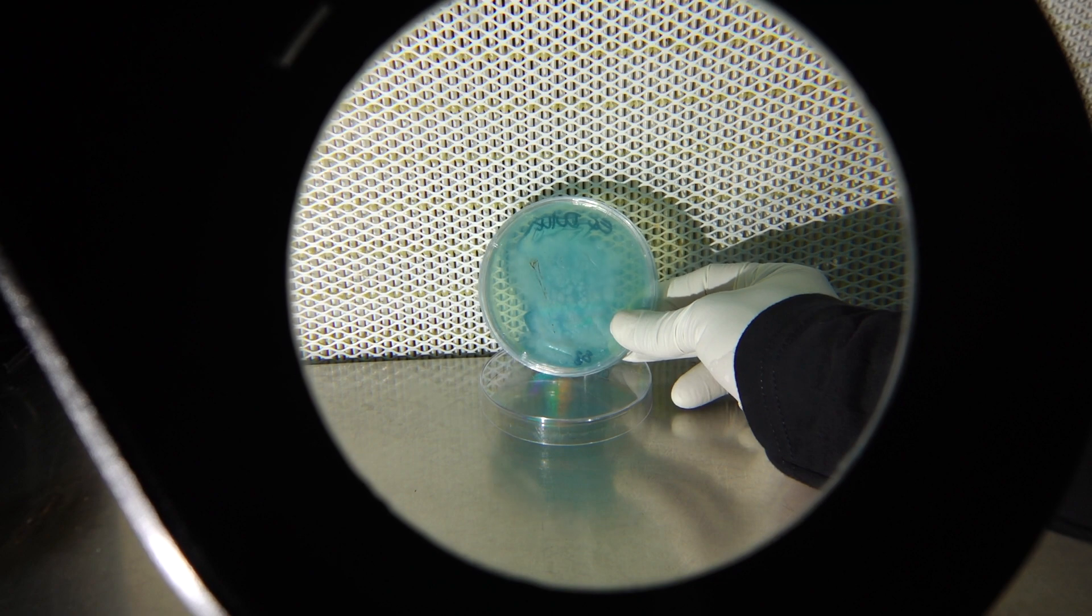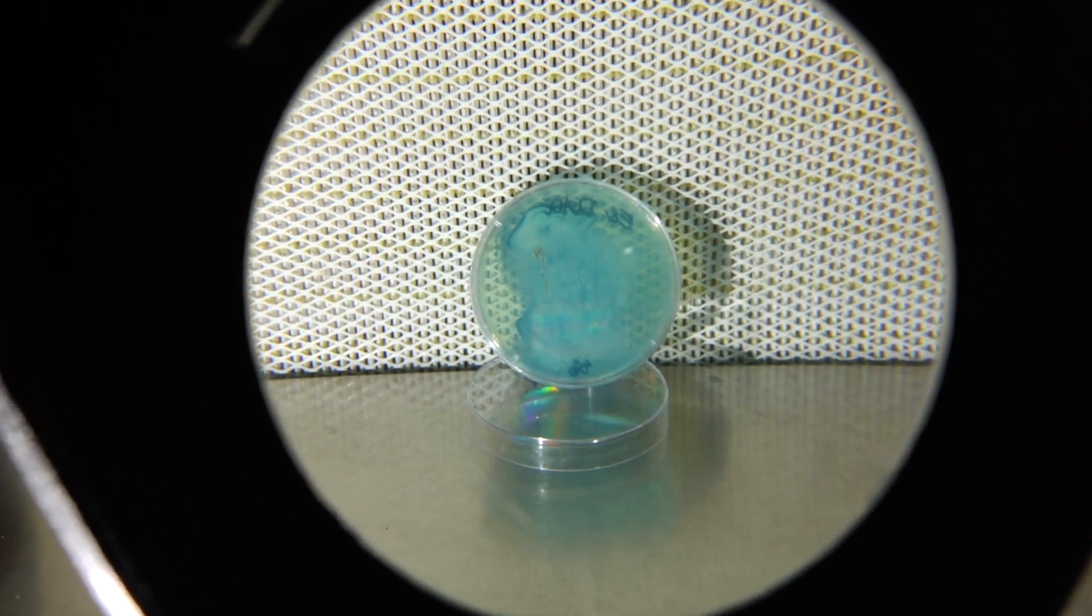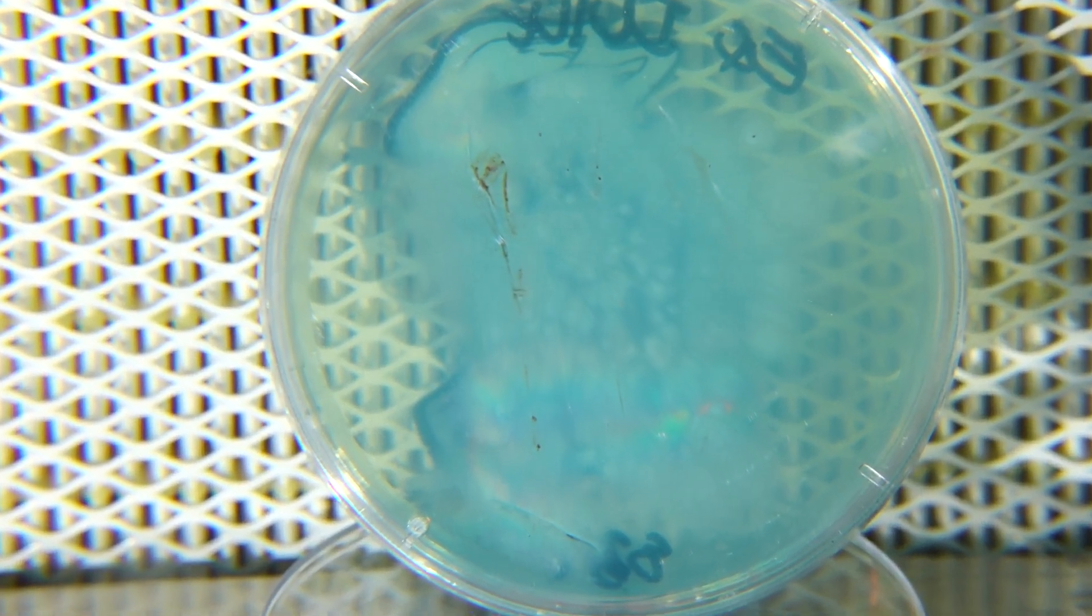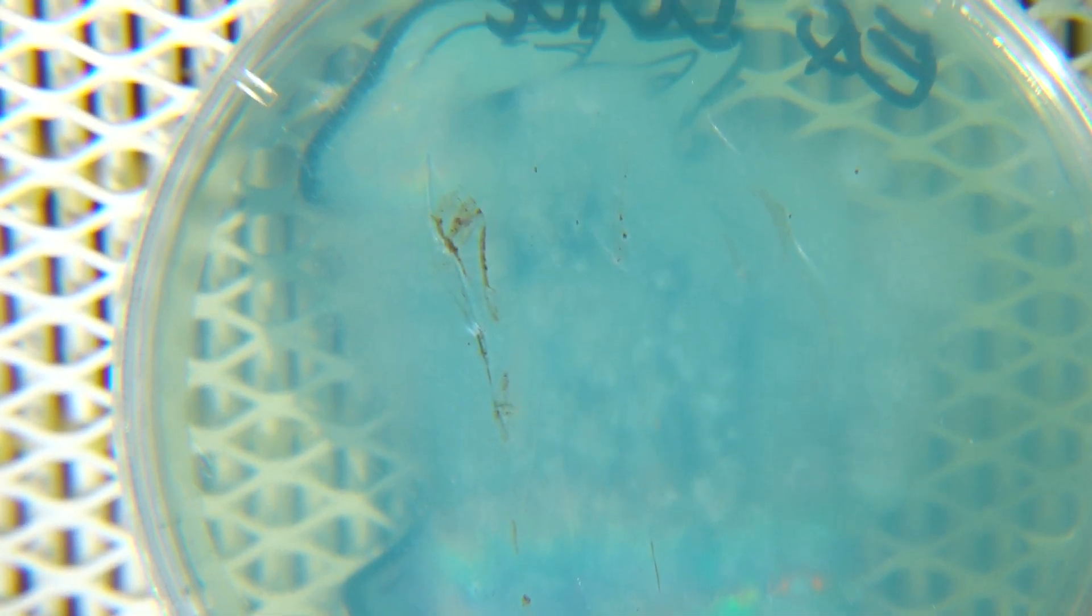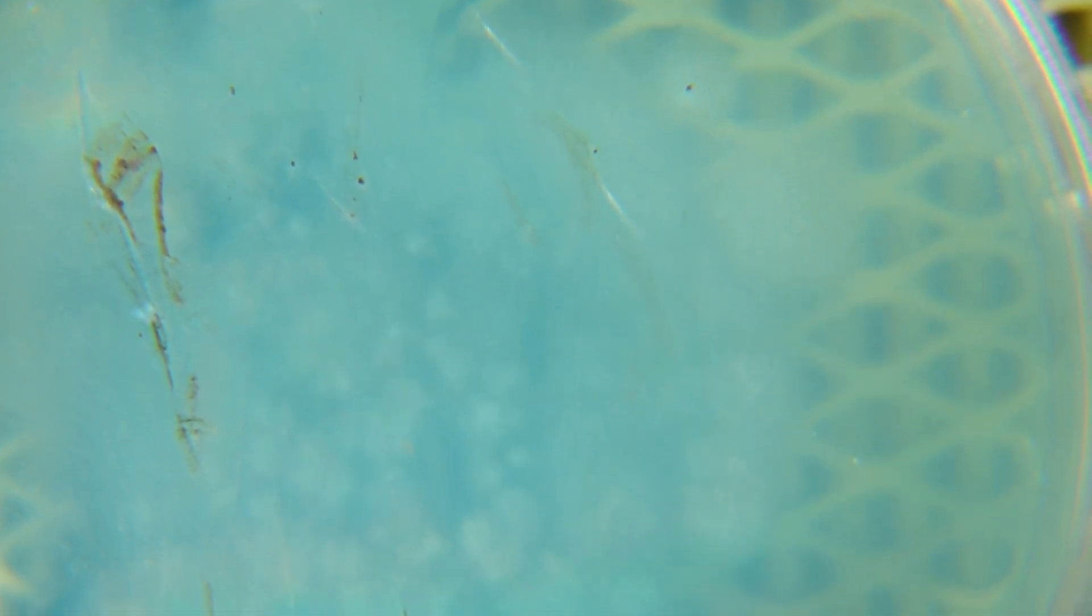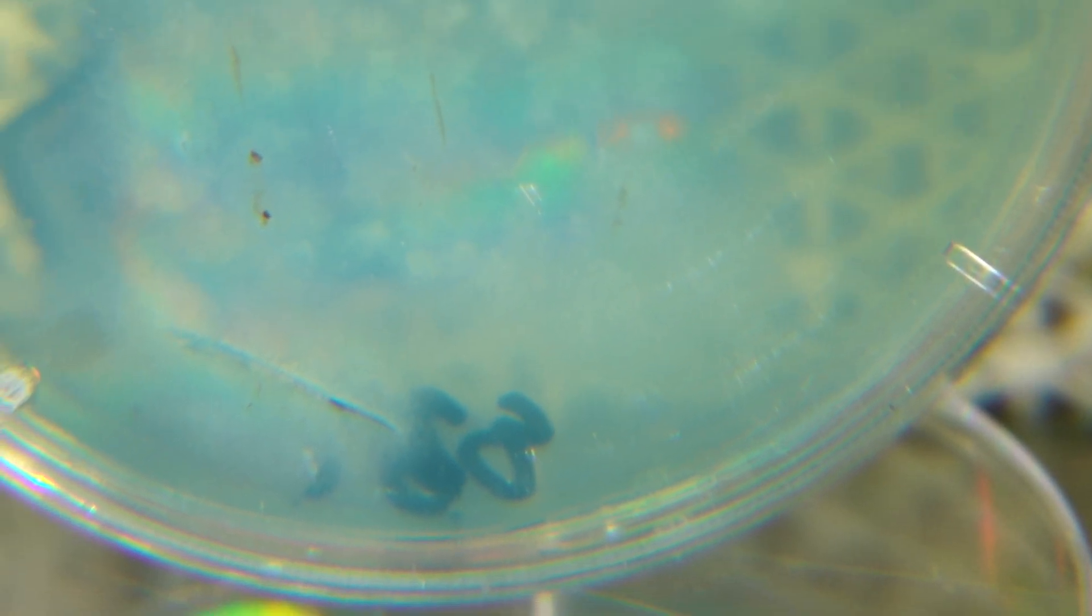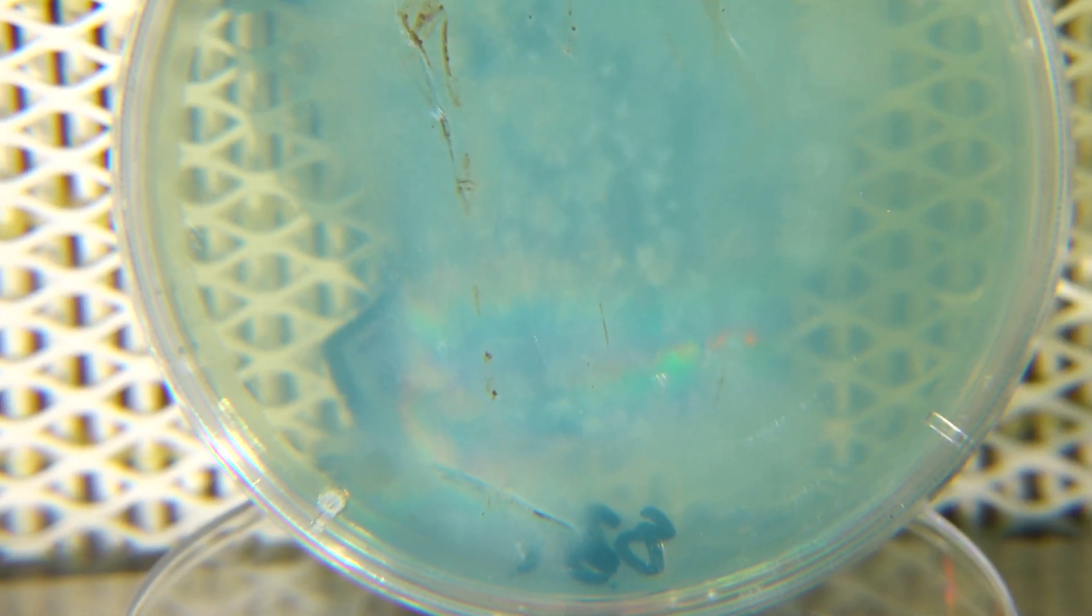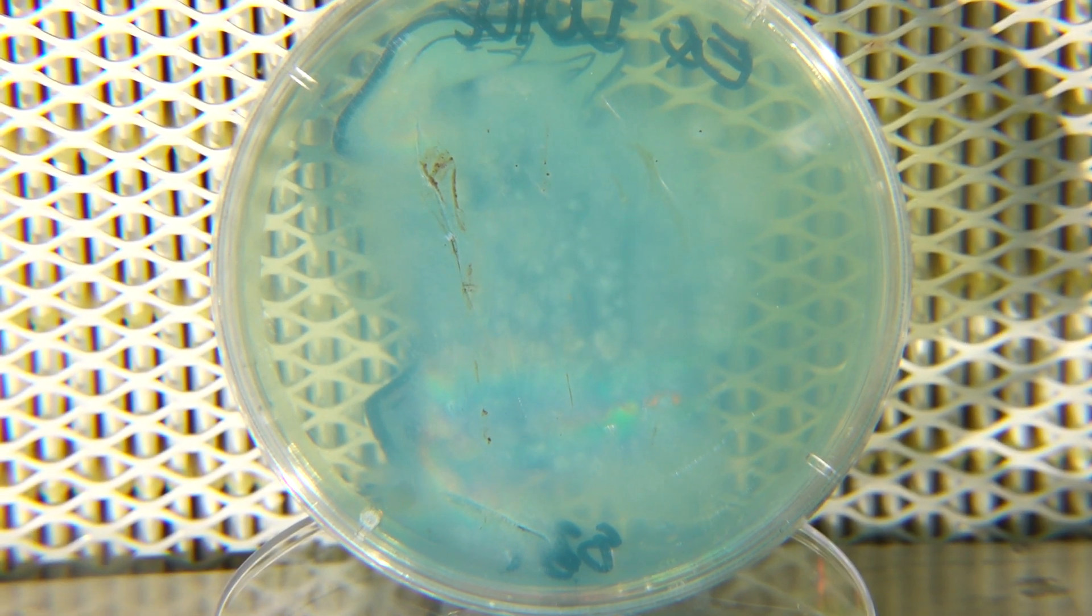This next plate is the Ecuador also showing very promising growth. You can still see some of the very dark spores that I placed on there originally and the streaking method actually worked really well. You can see that most of the plate is covered. I would say about 70% of the plate is covered. We'll give this a couple more days before we start making transfers for the next part of our series.